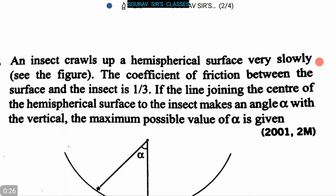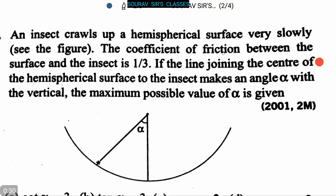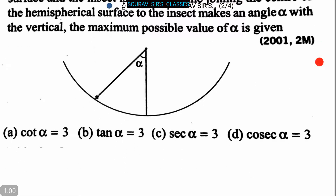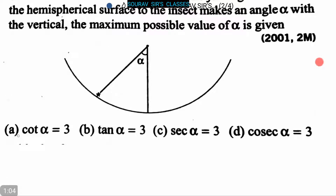Here is our first question: an insect crawls up a hemispherical surface very slowly. The coefficient of friction between the surface and the insect is 1/3. If the line joining the center of the hemispherical surface to the insect makes an angle alpha with the vertical, the maximum possible value of alpha is given. The options are: cot α = 3, tan α = 3, sec α = 3, or cosec α = 3. Now let's proceed to the answer.